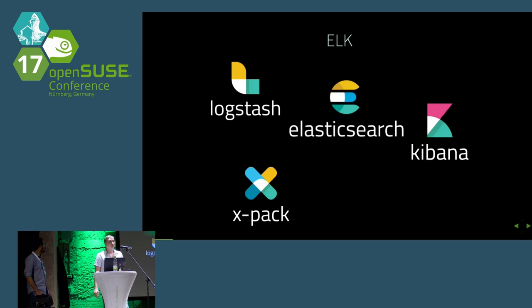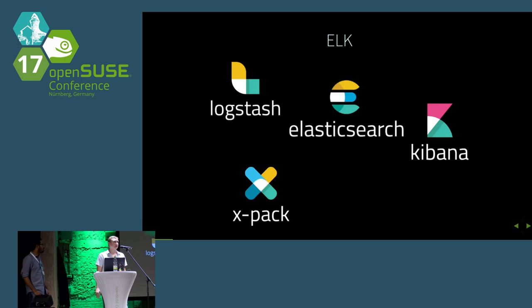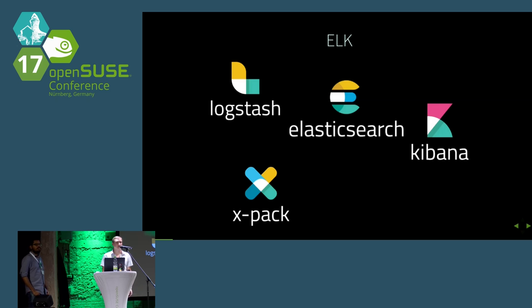Logstash aggregates the data, parses it, tags it, or modifies it, and then pushes it somewhere — for example, to Elasticsearch. Elasticsearch stores the data, indexes the data, and provides a RESTful interface to the data so you can query it and search it. And Kibana provides a nice interface to the data so you can easily look into it, query it, and also make graphics and do analysis.